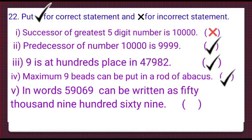Here is the fifth part in words. 59,069 can be written as 50,969. This is incorrect. So, we will put a cross here.